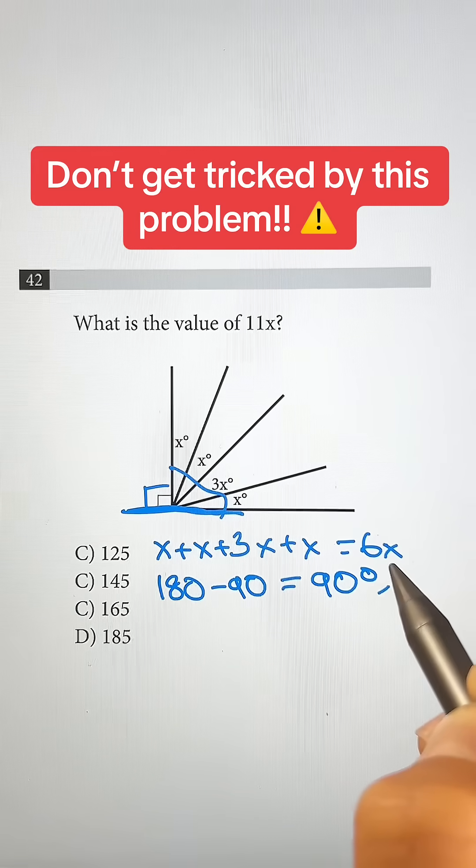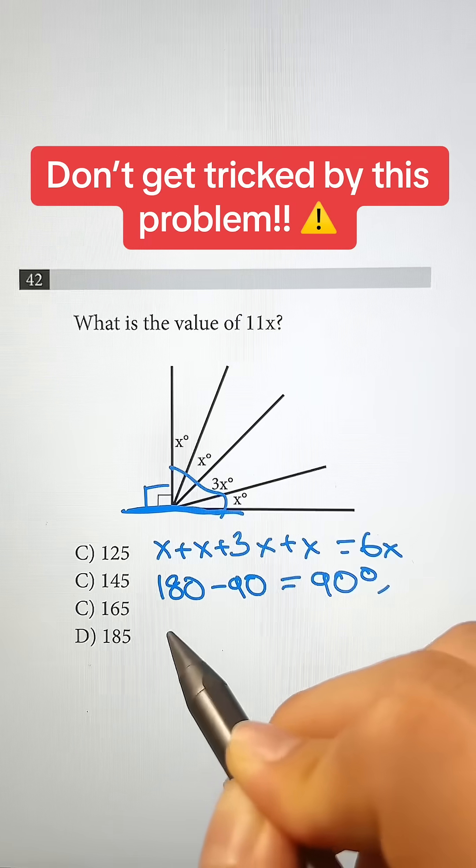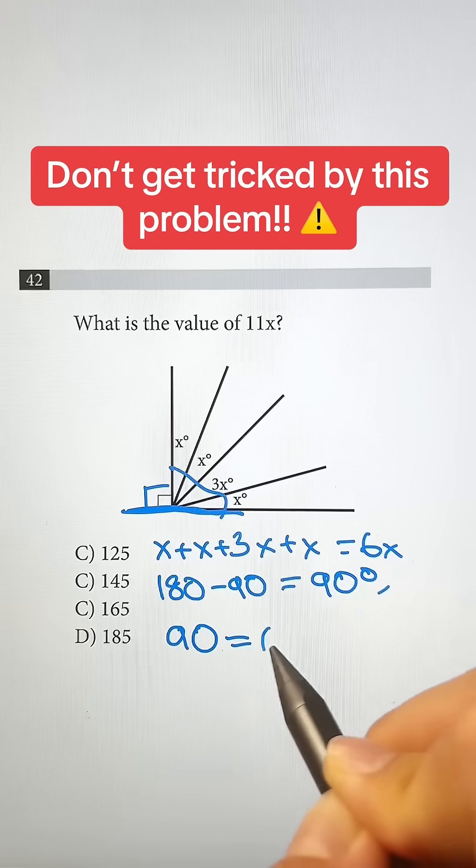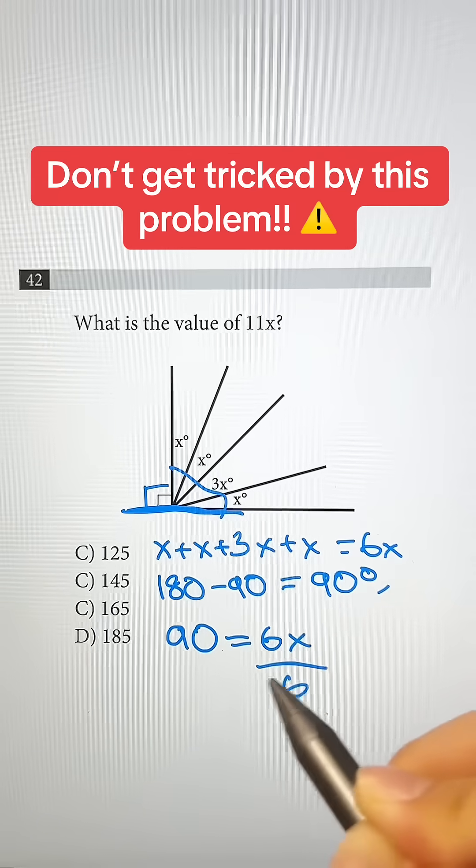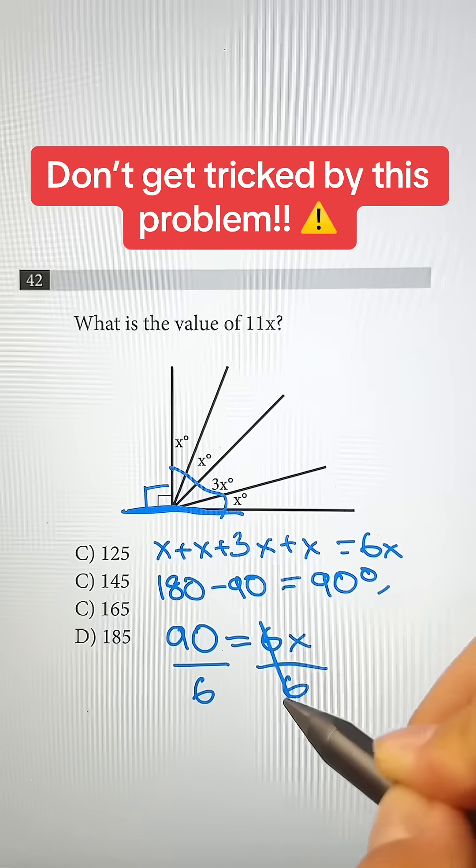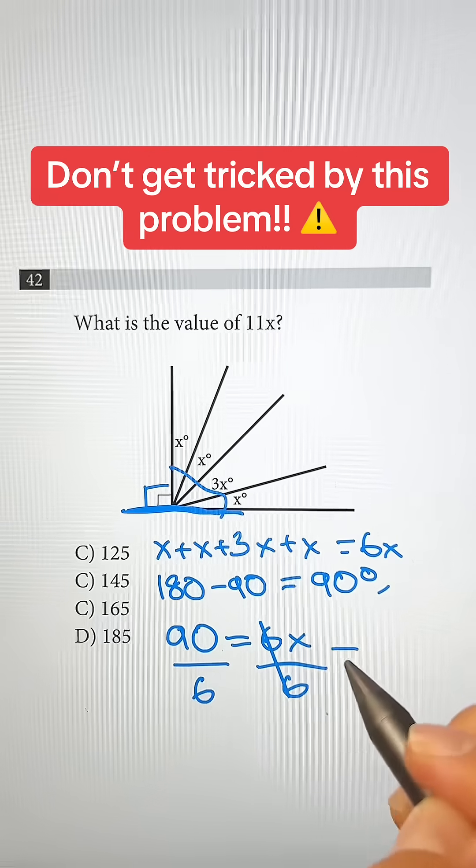So we know 90 degrees is equal to 6x. To solve for x, we just set the equation 90 is equal to 6x, then we divide both sides by 6. These cancel out and 90 divided by 6 is equal to 15.